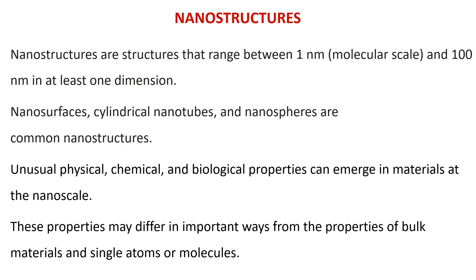Nanostructures are structures that range between 1 nanometer and 100 nanometers in at least one dimension. Nanosurfaces, cylindrical nanotubes, and nanospheres are common nanostructures. Unusual physical, chemical, and biological properties can emerge in materials at the nanoscale. These properties may differ in important ways from the properties of bulk materials and single atoms or molecules.